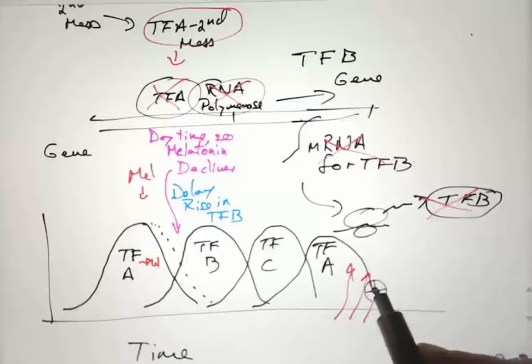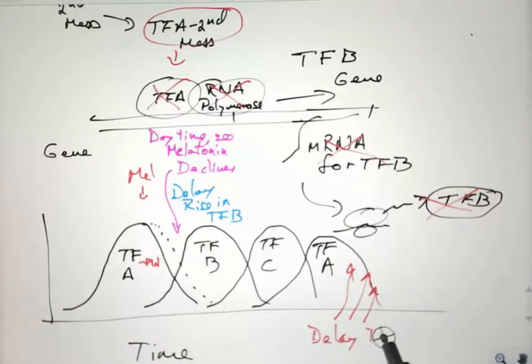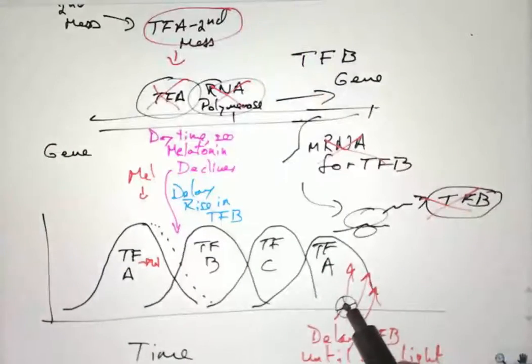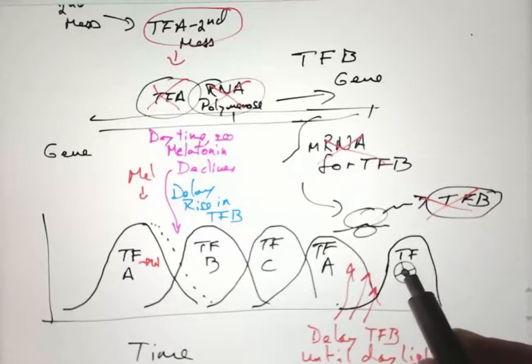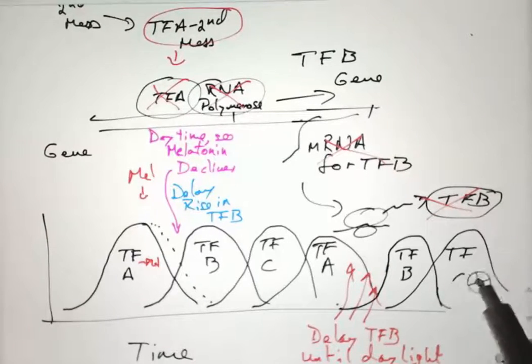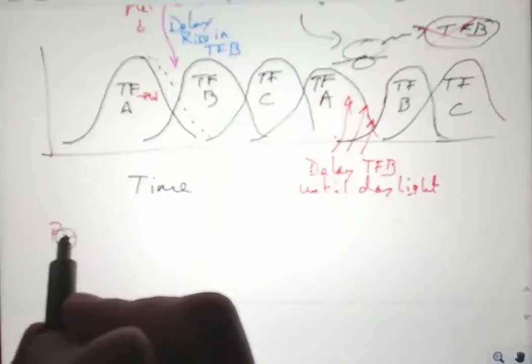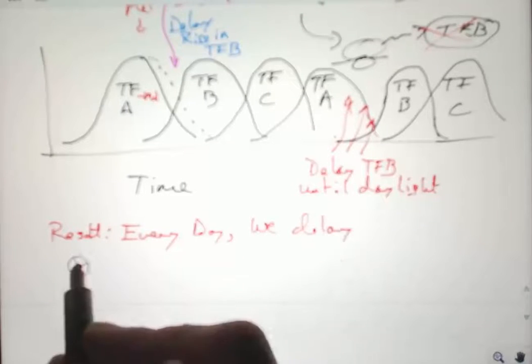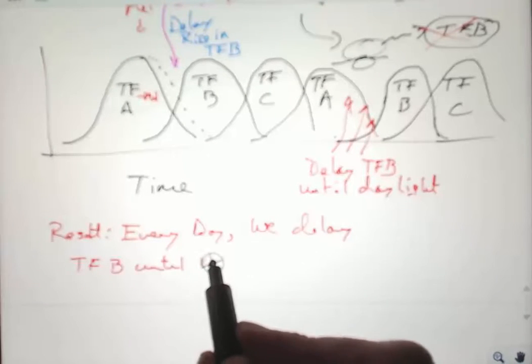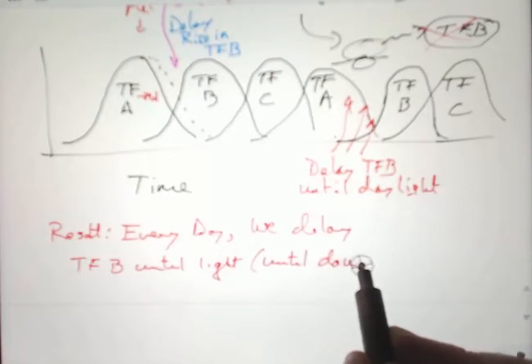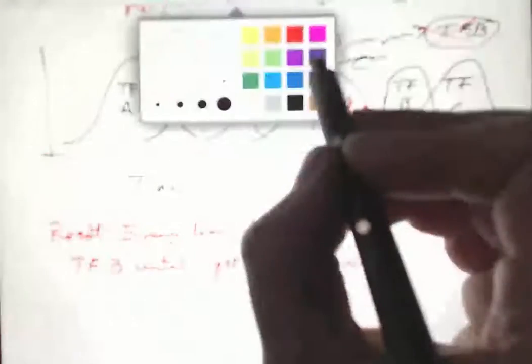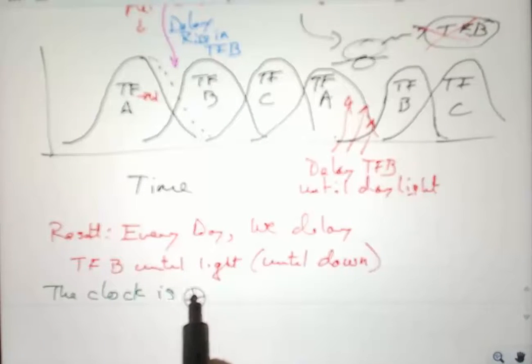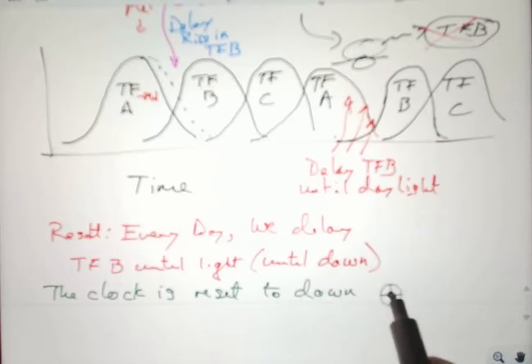The next day, again, you get a delay as long as it's dark. So there's a delay in transcription factor B until daylight. And again, transcription factor B starts and the cycle goes on. This gives us a delay every dawn. The result is that every day we delay transcription factor B until dawn, until light. And that sets our clock. The clock is reset to dawn every day.